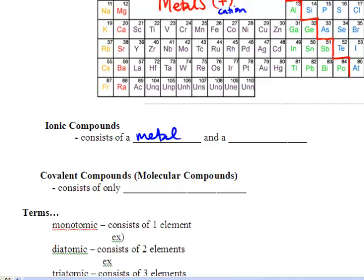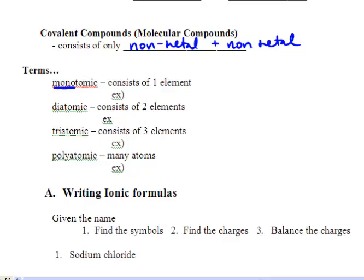Ionic compounds consist of a metal and a nonmetal. Covalent compounds consist only of a nonmetal and another nonmetal. So we have a few terms to remember. Monatomic - we know that mono means one. So this consists of one element. Something like neon, helium, a lithium ion or even a chlorine ion. They only have one element in them.